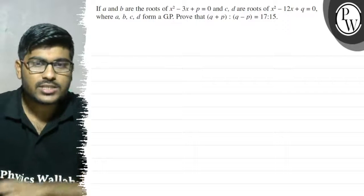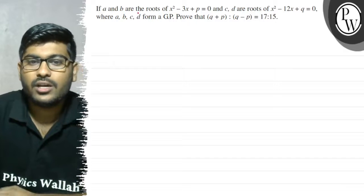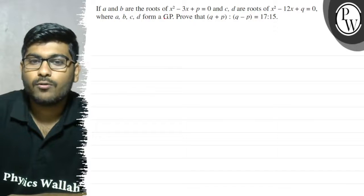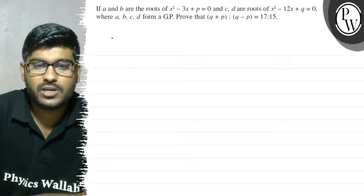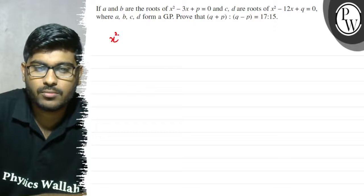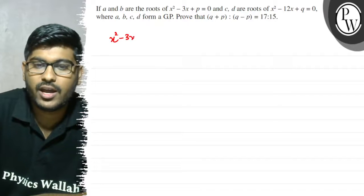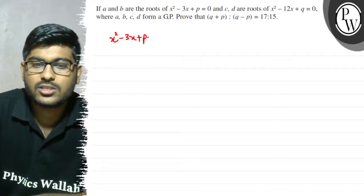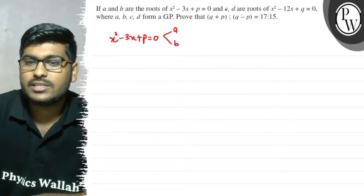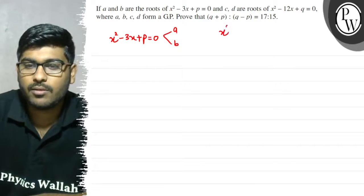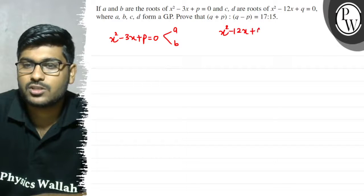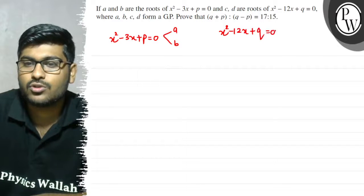Let's see this question. The question says that if a and b are the roots of x squared minus 3x plus p equals 0, which is a quadratic equation. And c and d are the roots of x squared minus 12x plus q equals to 0.